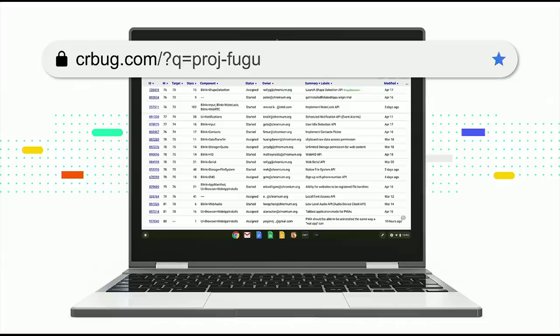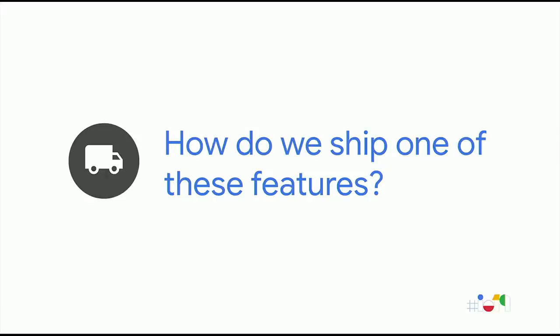We've identified about 75 features that we think are critical to closing that app gap, and I'm sure there are probably many more. You can see the stuff that we're currently looking at by going to crbug.com and looking for bugs that are tagged proj-fugu. Guiding a feature from that idea to a standardized shipped API is important to us.